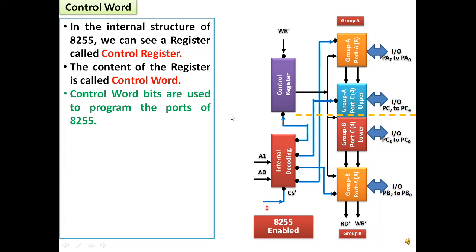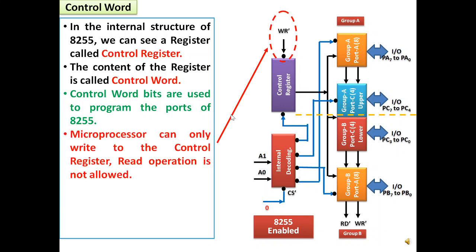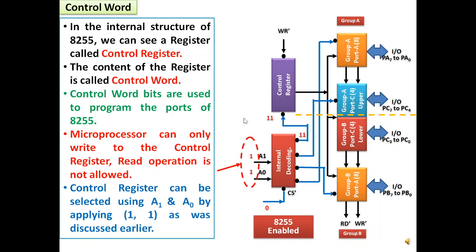The microprocessor can only write to the control register; read operation is not allowed. The control register can be selected using the A1 and A0 pins of 8255 by applying high logic to both pins, i.e., 11, as discussed in the earlier lecture.